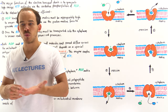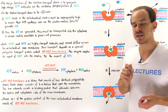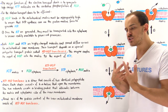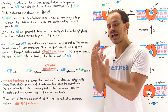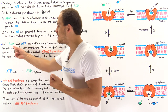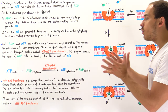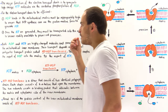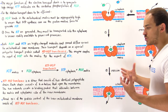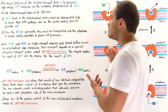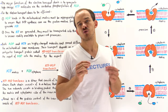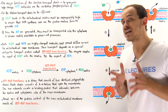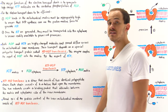ATP-ADP translocase is a homodimer, meaning it consists of two identical polypeptide chains. Each polypeptide chain consists of six alpha helices that span the membrane. These two identical subunits work together to create a binding pocket that can bind ADP and ATP, and this binding pocket alternates between facing the matrix side and facing the cytoplasmic side. About 15% of the protein content of the inner mitochondrial membrane consists of ATP-ADP translocase.